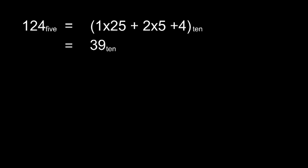Let's convert from one number base to another. We'll start with converting from other number bases to base ten. One, two, four in base five: the four is easy enough. The two means two lots of five, and the one means one lot of five times five, or one lot of twenty-five. If we add those together, we will get thirty-nine base ten.